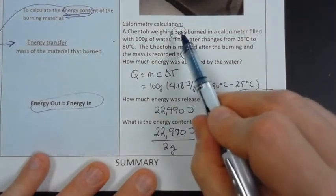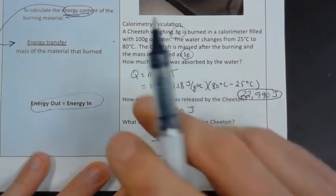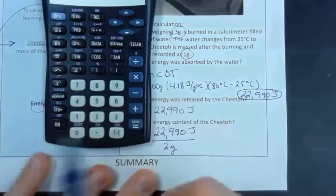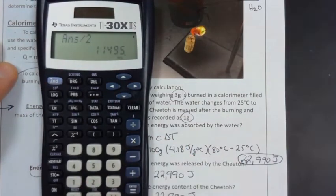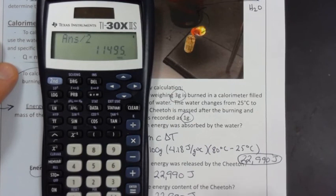Again, because we started with three, we've got one left over. So 22,000 divided by two means that the content of that Cheeto is 11,495 joules per gram.